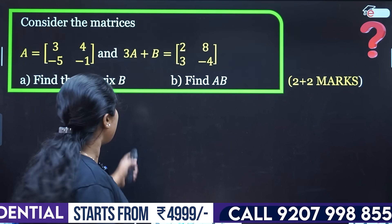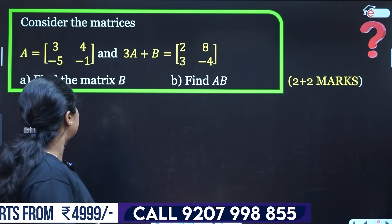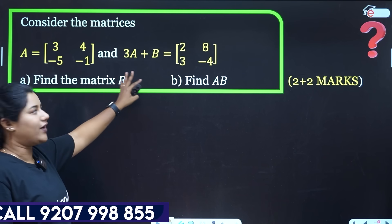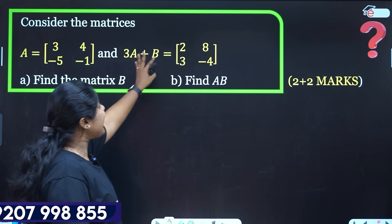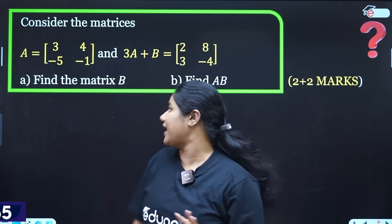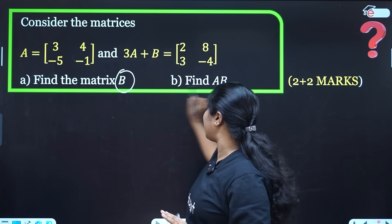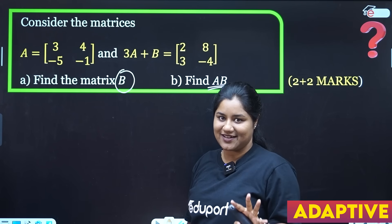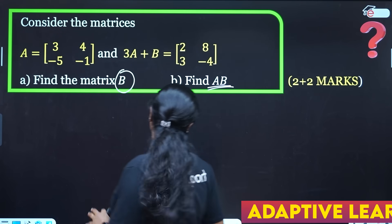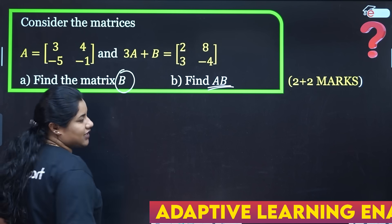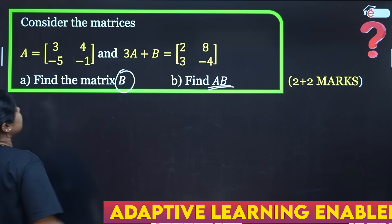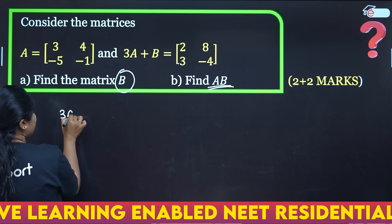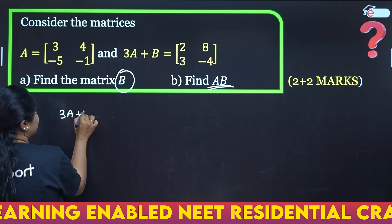Now let's look at the next problem. We have matrix A equal to [3, 4; minus 5, minus 1] and the relation 3a plus b equals a given matrix. So 3a plus b is equal to this mark. We have to find matrix B.